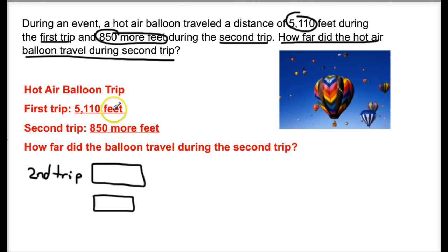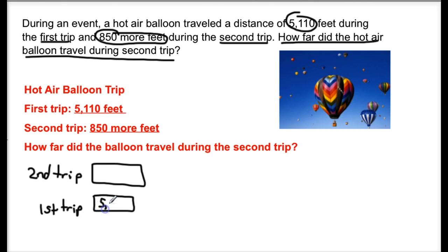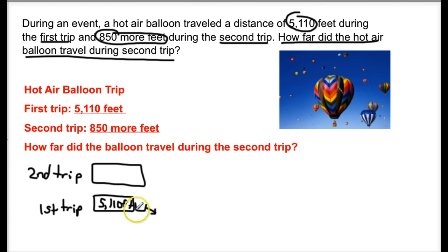I am not going to be able to put a number for the second trip yet because I don't know it. I know that the first trip was 5,110 feet and the second trip was 850 more — so that value is unknown right now. I do know what the first trip is, so I can go ahead and label the first trip as 5,110 feet. Then I have this piece that I need to solve for, and I do know this missing value because it is the extra — the 'more' that was added on. That is where my 850 would go.